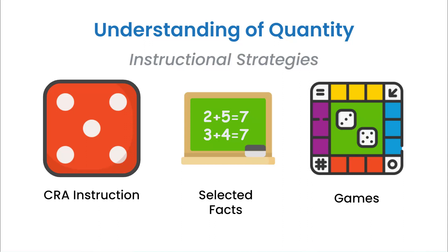To help with this, refer to our Math Facts to Memory Volume 1 book. Another great adjustment is those selected facts — choose two to three new facts and related operations, plus previously mastered ones, using representations to help build the understanding of quantity. And games, of course. Remember that the goal of a game is to practice the skills and strategies in a low-stakes environment. Keep the game short and focused with those select facts and skills.